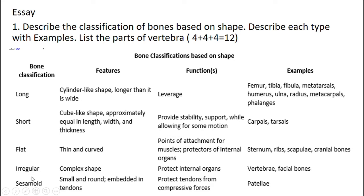Bones are classified into long, short, flat, irregular, and sesamoid. Long bones are cylindrical in shape, longer than their width. Their function is leverage and examples include femur, tibia, fibula, metatarsals, humerus, ulna, radius, metacarpals, and phalanges. Short bones are cube-like in shape, approximately equal in length, width, and thickness. Flat bones are thin and curved.